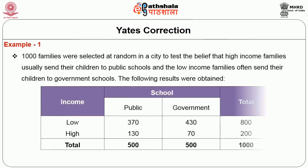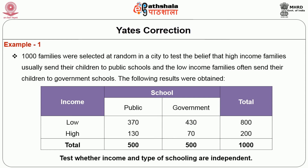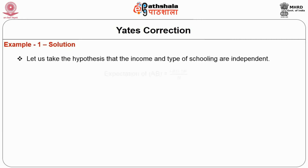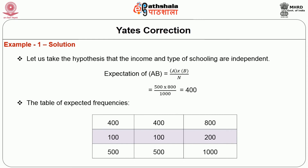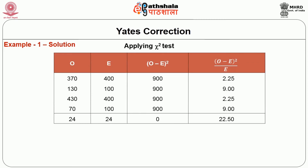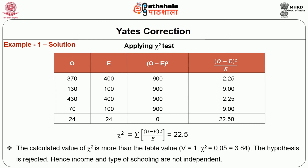Example: 1000 families were selected at random in a city to test whether high-income families send their children to public schools and low-income families to government schools. The hypothesis is that income and type of schooling are independent. The expected frequency is calculated as (row total × column total)/n = (500 × 800)/1000 = 400. After applying the chi-square test, the calculated chi-square value is 22.50, which is greater than the table value (ν=1, χ²₀.₀₅ = 3.84). Therefore the hypothesis is rejected — income and type of schooling are not independent.